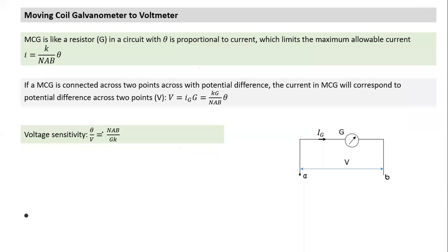Similar to current sensitivity, we now want to understand voltage sensitivity — the angular displacement per unit voltage. Voltage sensitivity = theta/V = NAB/(G × K), where K is the torsional constant. This is similar to current sensitivity, except it gets divided by an additional term G, which is the resistance of the galvanometer.